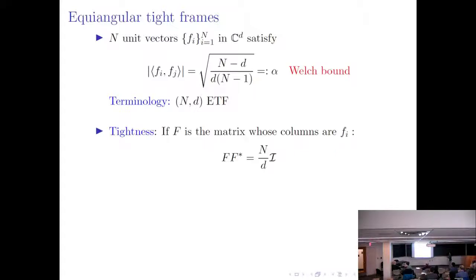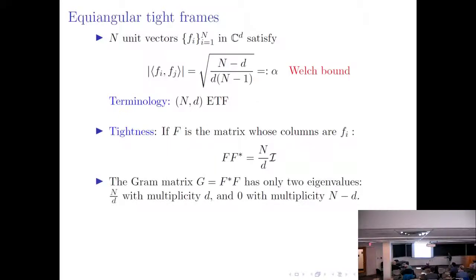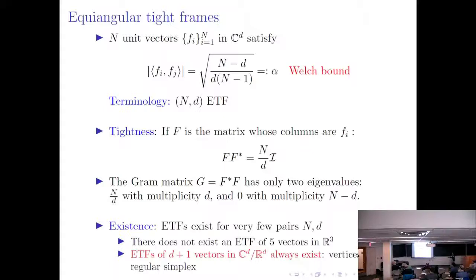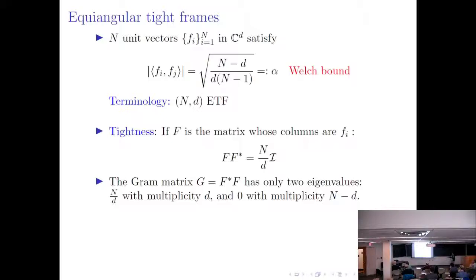To recap: in equiangular tight frames, the inner product between any two vectors in absolute value takes the same value — the Welch bound. We use the notation (n, d)-ETF to indicate an equiangular tight frame of n vectors in a d-dimensional space. The tightness means FF^T is a multiple of the identity, so it has one eigenvalue: n over d. The Gram matrix will then have two eigenvalues: n over d, and zero, with corresponding multiplicities.